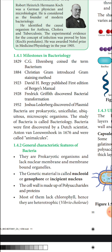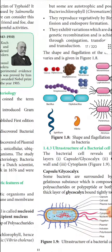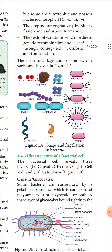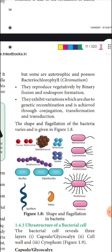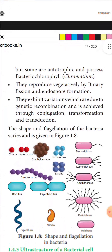Most bacteria lack chlorophyll and are therefore heterotrophic. However, some bacteria possess bacterial chlorophyll pigments and are autotrophic. An example is Chromatium, which contains bacterial chlorophyll and can prepare its own food.